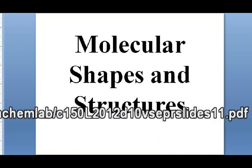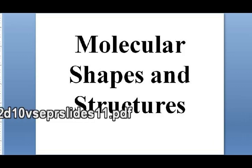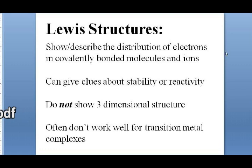Rather than do a full pre-lab video, I'm just going to do a little run-through on PowerPoint. Lewis structures are tools — pictures we can draw that describe and show the distribution of electrons in covalently bonded molecules and ions. Chemistry is really all about electrons and where the electrons are. Lewis structures allow us to formally place those electrons in an ion or an atom or a molecule in ways that tell us something about how the molecule is held together, and we can use them to give some indication of the stability or reactivity of a molecule or ion.